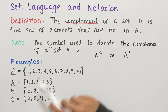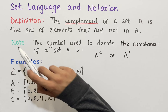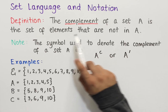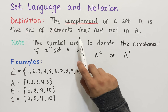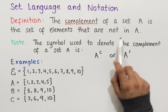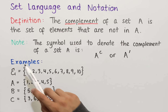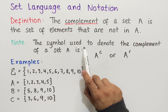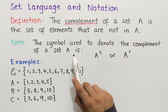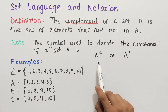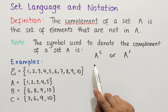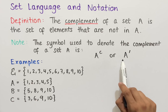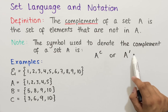Let's look at what the complement of a set is. The complement of a set A is the set of elements that are not in A, where A is just any set. The symbol used to denote the complement of a set A is either A with a superscript small c, or A with a superscript dash.